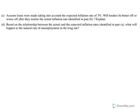On to C and D, the last two parts of this question. C says: assume loans were made taking into account the expected inflation rate of 3%. Will lenders be better off or worse off after they realize the actual inflation rate identified in part B, and explain? Again, it's multiple choice — better off or worse off — and then we just have to explain. The answer for C is going to be better off.